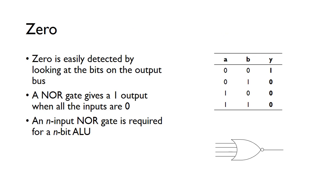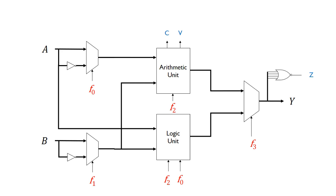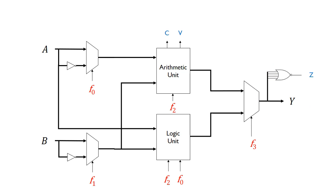The next flag is the zero flag, which is very easy to detect because we just need to look at the output bus and detect when all the bits are zero. We can very easily detect that using a NOR gate. From the NOR gate truth table, the output is one only when both inputs are zero. We can extend that for a NOR gate with more than two inputs — for a 4-bit ALU, a four-input NOR gate detects this zero condition. We take the four bits on the output bus, separate them into individual bits, feed them into this NOR gate, and the Z output will be one when the output is zero.